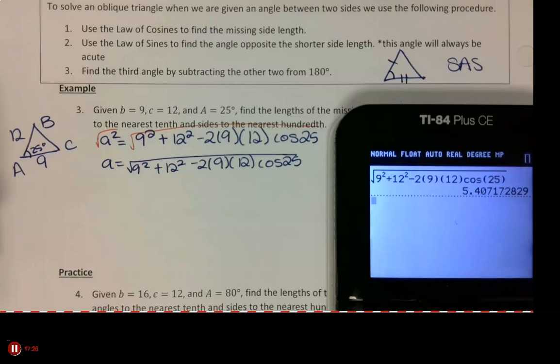So I'm going to have 9 squared plus 12 squared minus 2 parentheses 9 parentheses 12 cosine 25. And then I get this. The problem wants me to round side lengths to the nearest hundredth. So two decimal places for that. What is this side length? Mm-hmm.